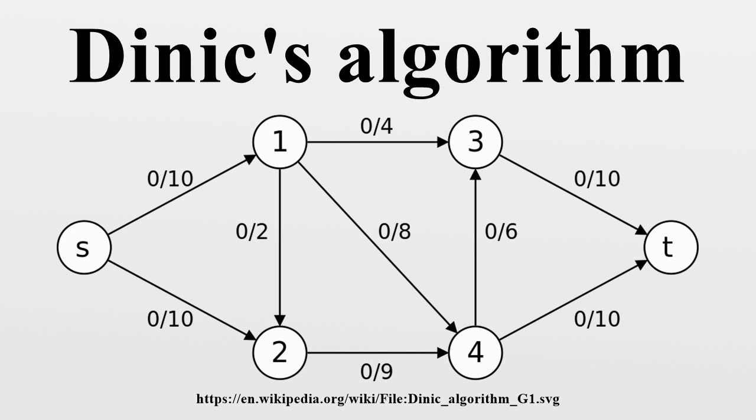Let be a network within the capacity and the flow of the edge respectively. The residual capacity is a mapping defined as, if, otherwise.